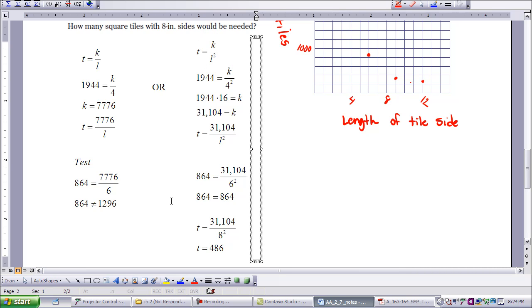So my specific equation, T equals 31,104 over L squared is my specific equation. But the real question was, how many square tiles with 8-inch sides would be needed? So now I'm going to use my specific equation and use the value for 8 in place of L. So 31,104 divided by 8 squared is 486. So that means I'm going to need 486 tiles for my project.